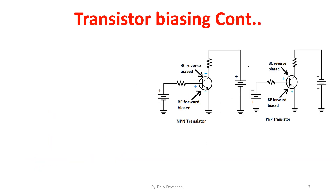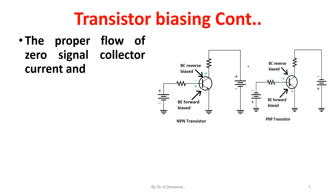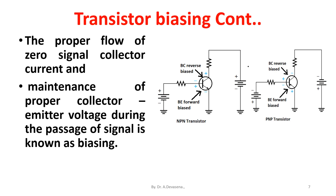The proper flow of zero signal collector current and the maintenance of proper collector-emitter voltage during the passage of signal is known as biasing.